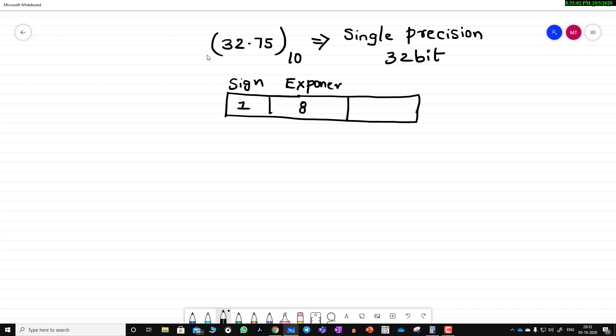In this video, let us represent 32.75, which is in decimal, in single precision format. Single precision is a 32-bit format. The first bit indicates the sign bit, the next 8 bits indicate the exponent, and the remaining 23 are the mantissa.